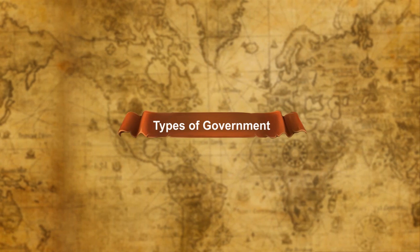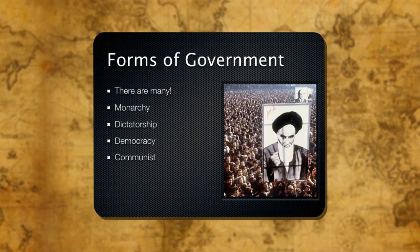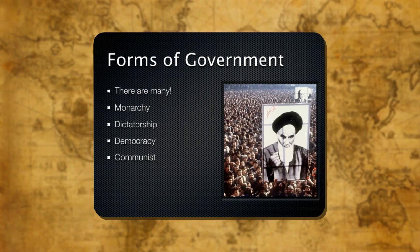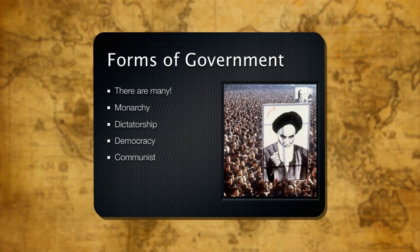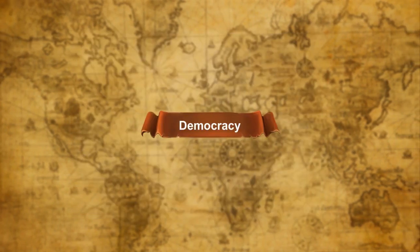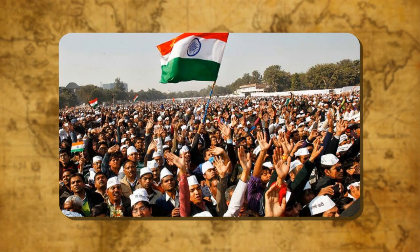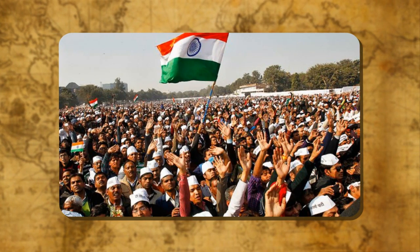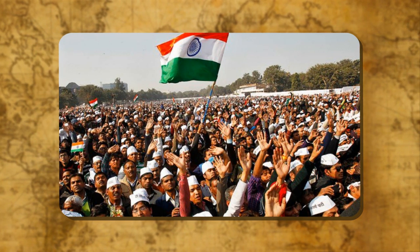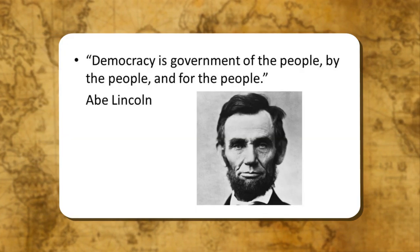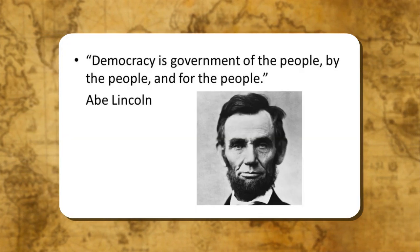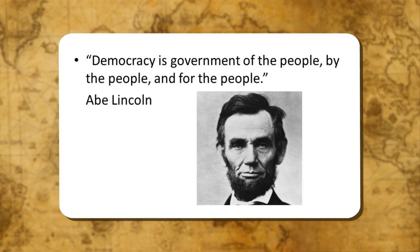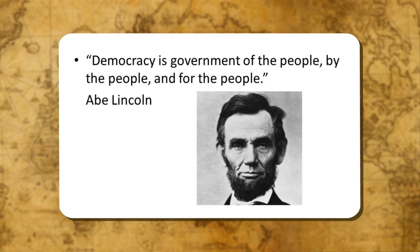There are various types of government, but Democracy, Monarchy, and Dictatorship are the most common forms. In a democratic government, people have the right to participate in the governing process and in making important decisions for the welfare of the society. According to Abraham Lincoln, democracy is the government of the people, by the people, and for the people.